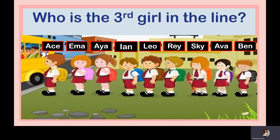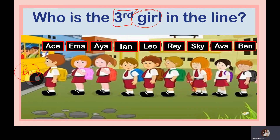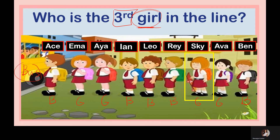Another example: Who is the third girl in the line? The point of reference is the bus because they are lining up to get into it. Ace is a boy, Emma is a girl, Aya is a girl, Ian is a boy, Leo is a boy, Ray is a boy, Sky is a girl, and Ava is a girl. Since the question asks for girls only, we don't count boys. First girl is Emma, second is Aya, third is Sky. So the third girl is Sky.